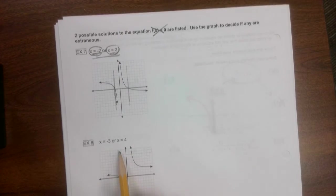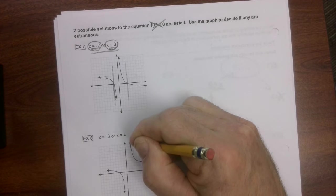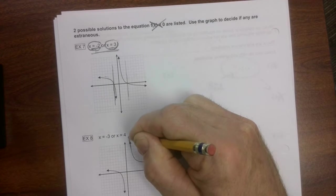So we would say neither of these are extraneous roots. Then we go down to this one. I'm going to tweak this one a little bit so you can understand what I'm saying.